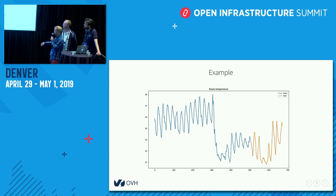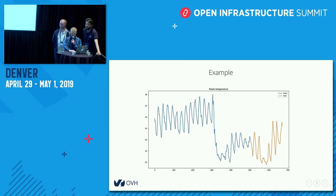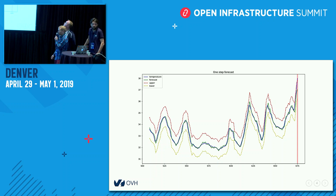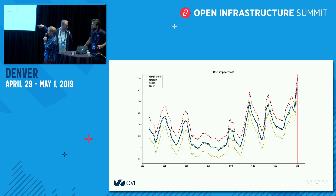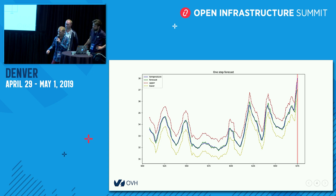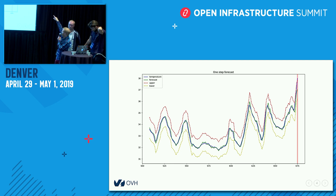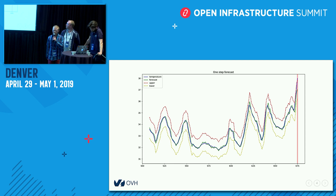If we train a Sarima model on the blue curve and evaluate it on the yellow part with correct parameters, here is what we obtain for a one-hour forecast. The forecast fits the temperature, but it's just a one-step forecast. We are not using this forecast because it's too quickly reactive to any unexpected events. As you can see on the right of the plot, the forecast adapts too quickly to an overheat and we detect it a bit too late.